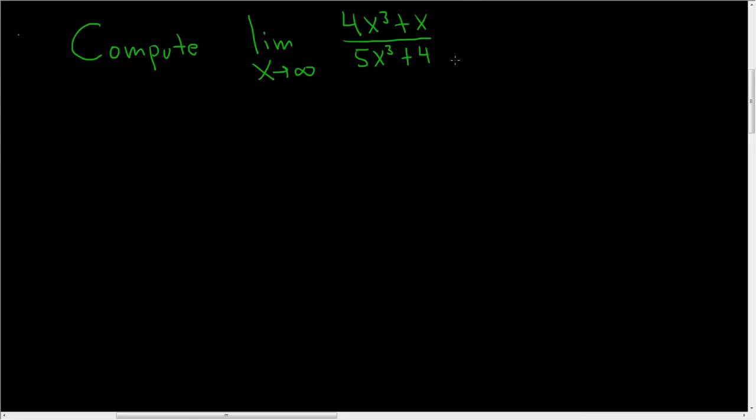The degree in the denominator is 3. The degree in the numerator is 3. When the degrees are the same and you're approaching infinity, the answer is the ratio of the leading coefficients. So 4 over 5. So again, it's the ratio of the leading coefficients.